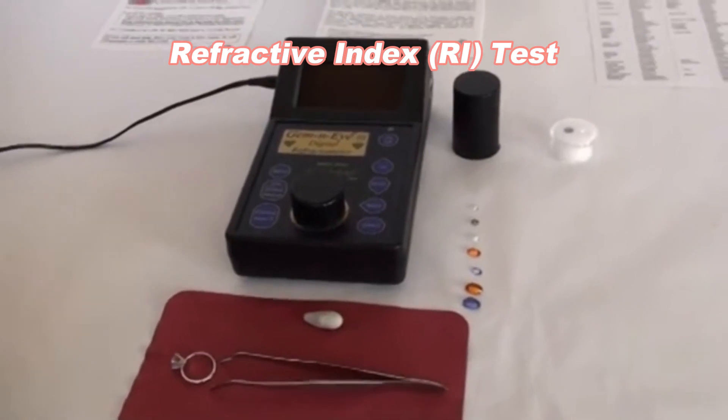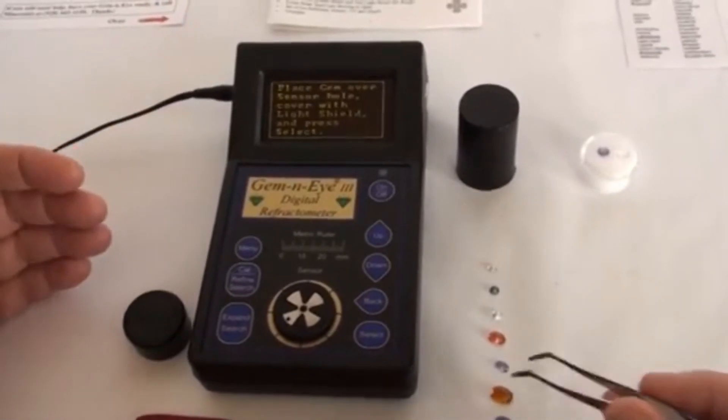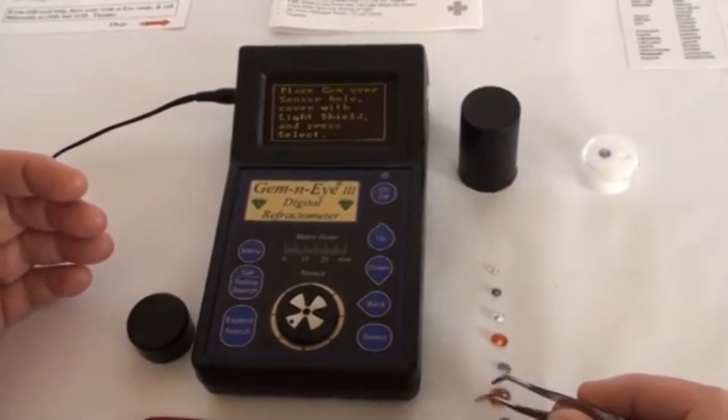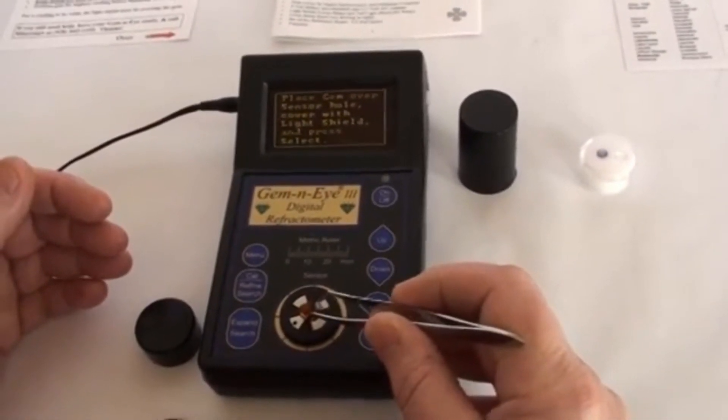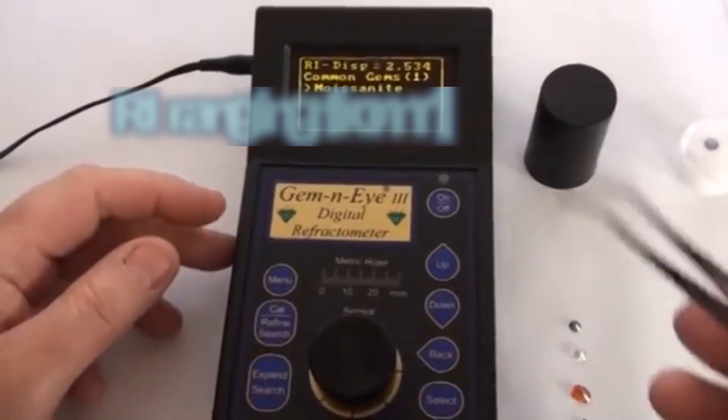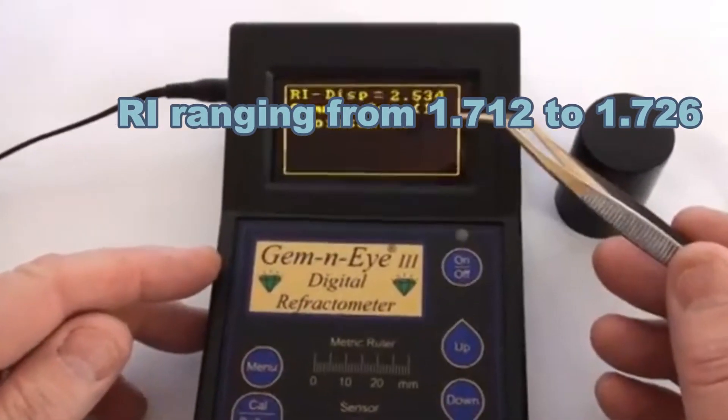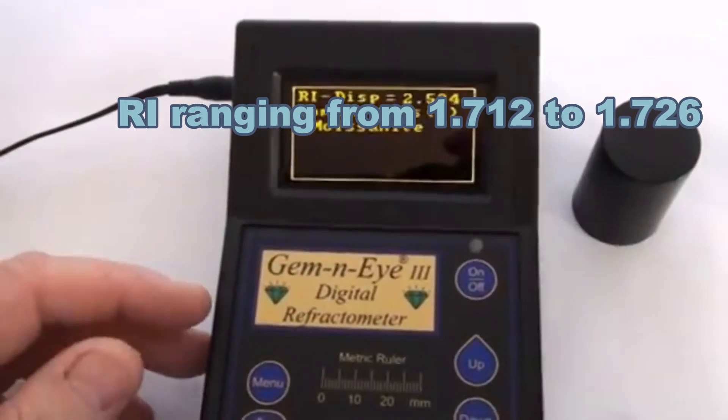Refractive Index (RI) Test: Measure the refractive index of the spinel. You can use a refractometer to determine how much the gemstone bends light. Spinel typically has an RI ranging from 1.712 to 1.726.